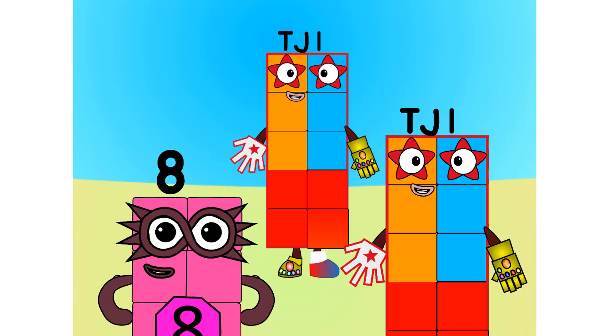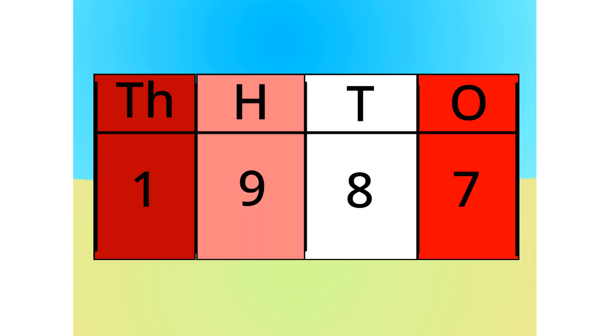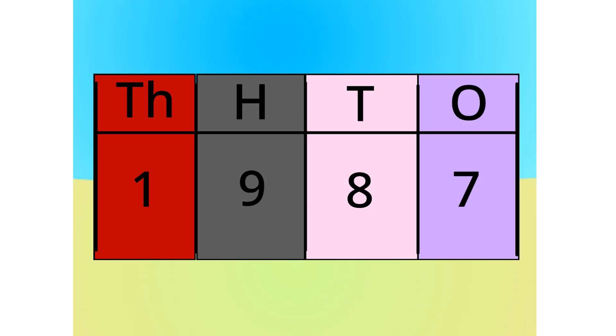Let me show you all why we count in base 10 in a few different ways. First off, the number table. Let's do 1,987 for example. Do you see anything that relates to this number? This number is made up of 1,000s, 900s, 8 tens, and 7 ones.